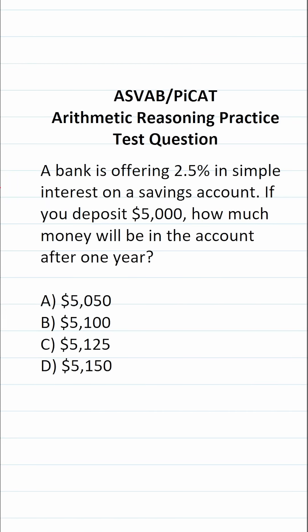This arithmetic reasoning practice test question for the ASVAB and PyCat says: a bank is offering 2.5% in simple interest on a savings account. If you deposit $5,000, how much money will be in the account after one year?